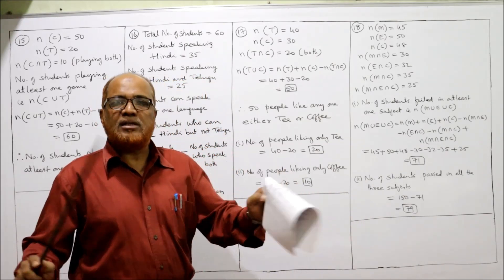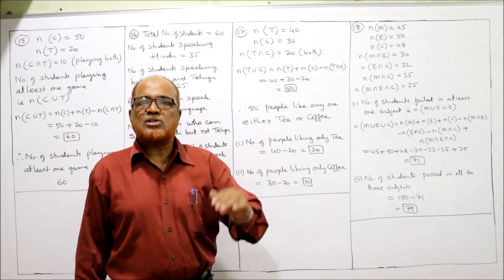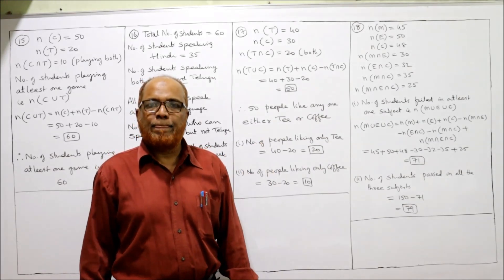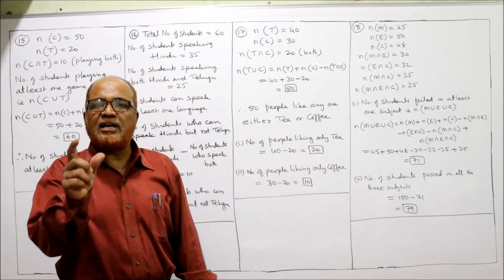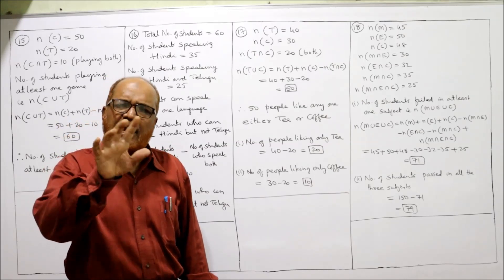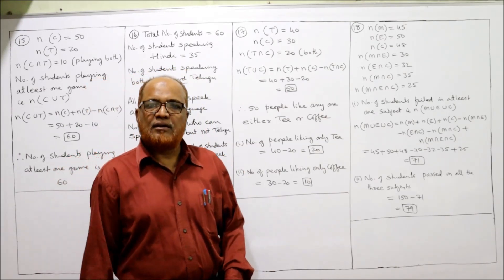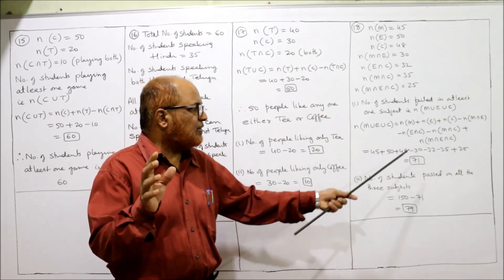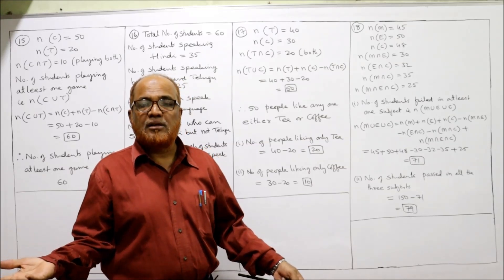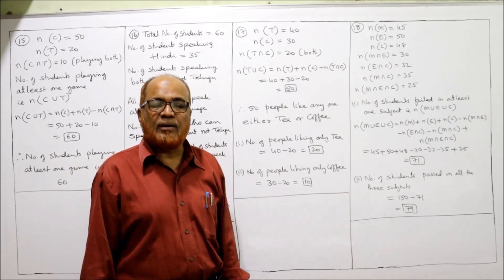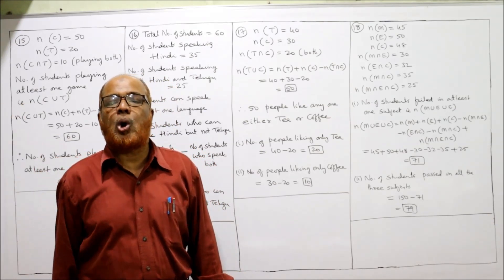The second question is: how many students passed in all subjects? To find this, remove the students who failed. Total students = 150, and 71 students failed in at least one subject. So 150 minus 71 equals 79. Therefore, 79 students passed in all three subjects.